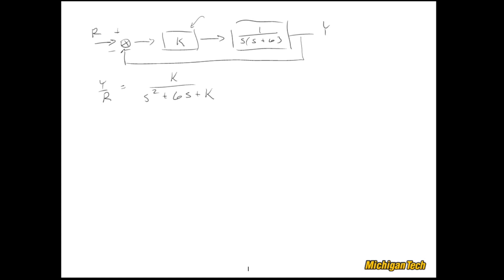If you're doing some sort of design, you might have to pick a K to satisfy some design requirements. It might also be helpful to look at a single plot in the complex plane of all possible closed-loop poles for all possible values of K — and that's what a root locus is.